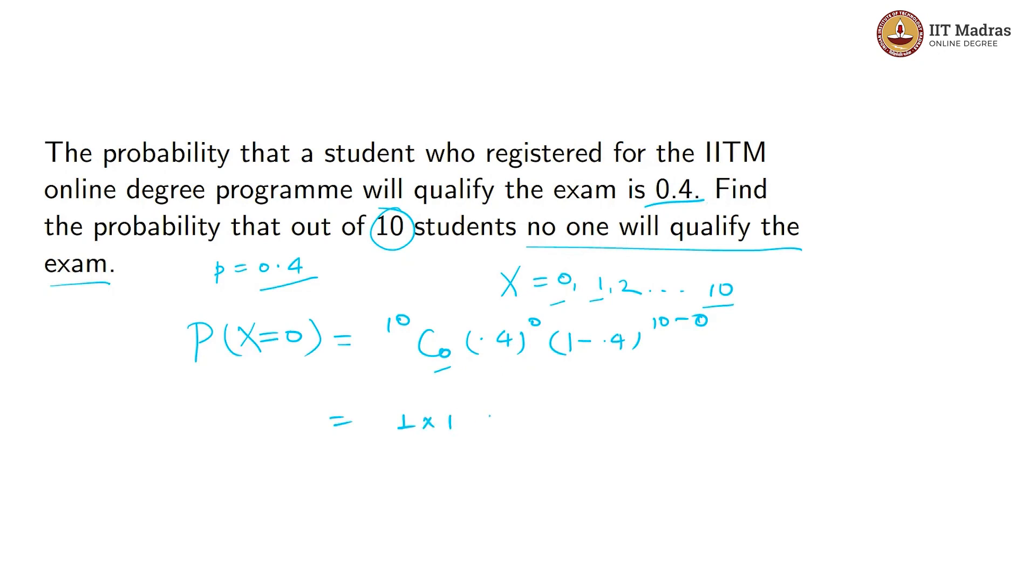0.4 to the power 0 is 1, so this equals 1 times 0.6 to the power 10, which is nothing but 0.6 to the power 10. This is our answer for the probability that out of 10 students, no one will qualify the exam.